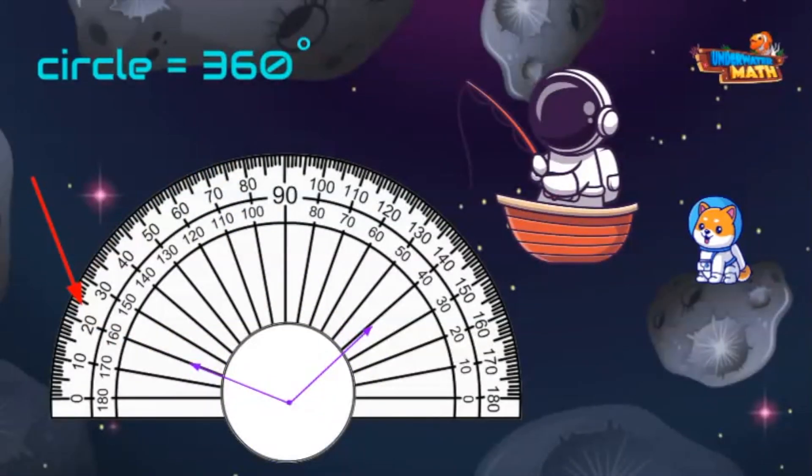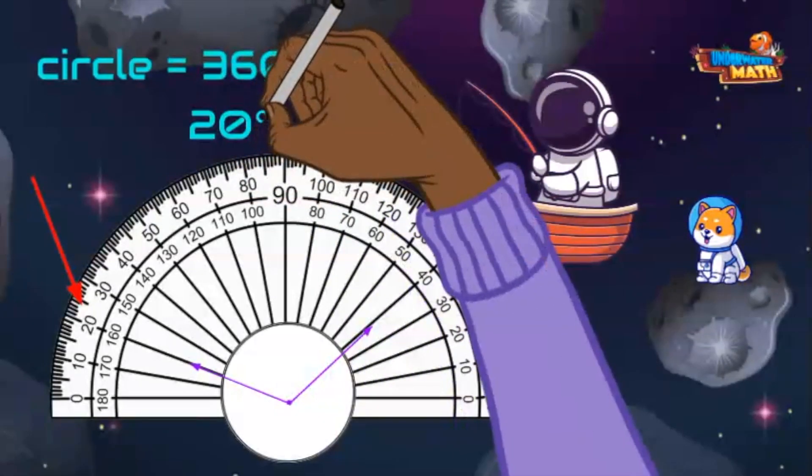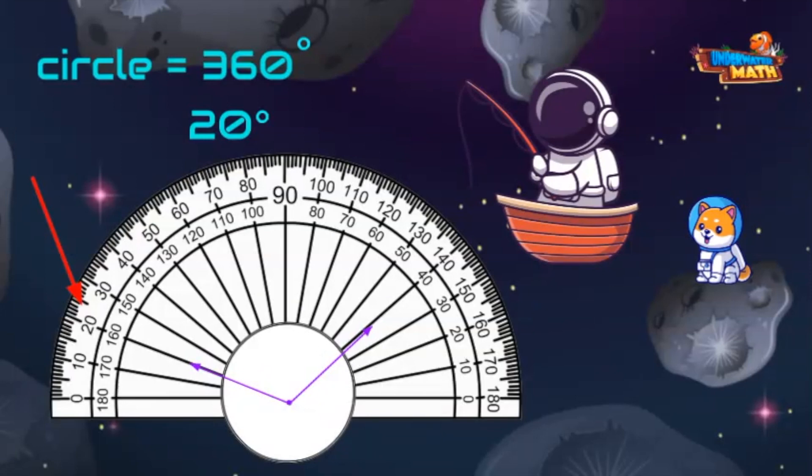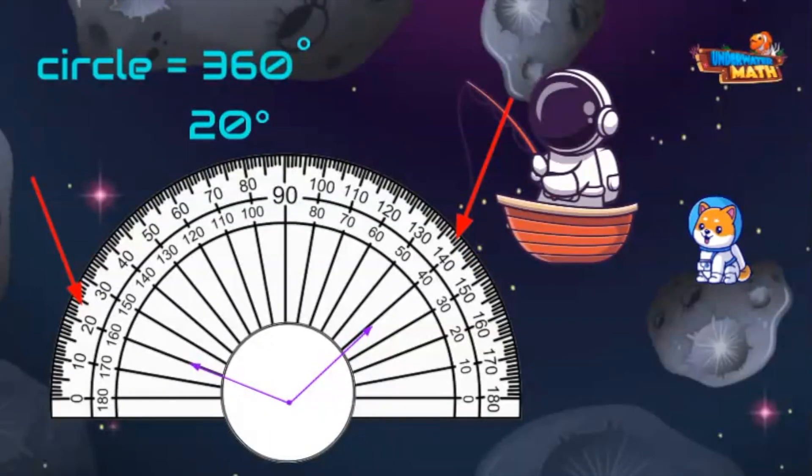The first ray shows either 160 or 20 degrees. Let's use 20 degrees. We can use either one as long as we use the same row of numbers on the other side. Since this number is on the top row of the protractor, we must use the same number on the top row of the protractor on the other side.